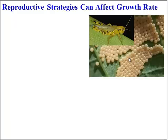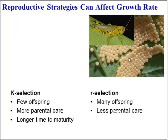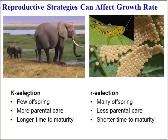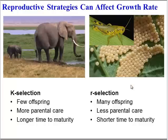Let's look at reproductive strategies because they can affect growth rate. Elephants practice what is known as K-selection: each time they reproduce, they have only a few offspring, they give those offspring a lot of care, and it takes a while for the offspring to mature. You're going to see logistic growth more frequently with this type of organism. In contrast, insects and other organisms favor r-selection: they have many, many offspring — millions of eggs — don't give the offspring much care, and it doesn't take long for offspring to mature. In this case, you're likely to see exponential growth, at least initially.